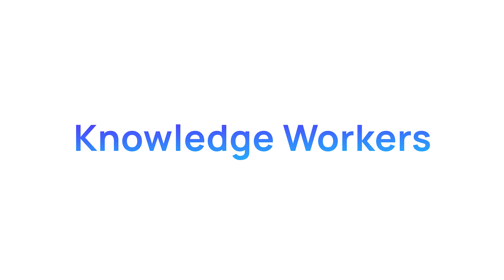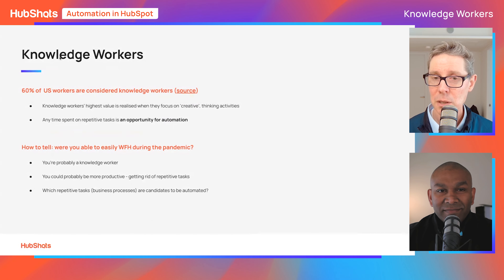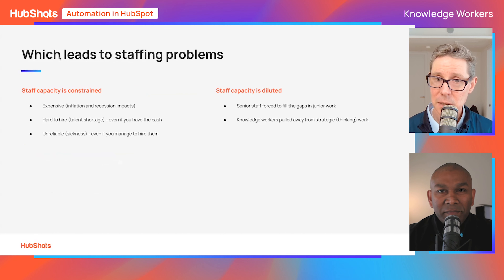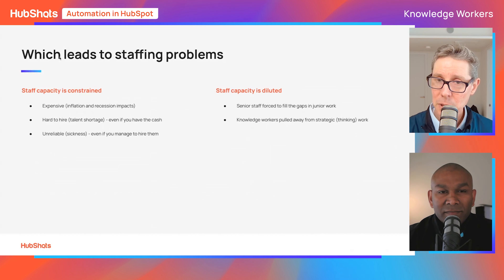Keep that on one hand and then on the other, think about knowledge workers. Statistically, more than 50% of workers these days are classed as knowledge workers. My rule of thumb: if you were able to work productively during the pandemic from home and get stuff done, you're probably a knowledge worker. What we're finding is these economic conditions result in staff capacity being constrained, and knowledge workers are being pulled off knowledge work — thinking work, creative work, outcome-based work — just to fill the gaps.